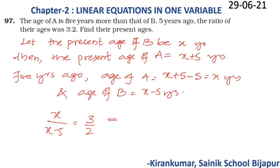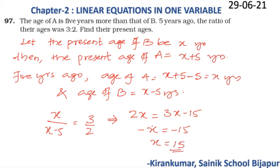Cross-multiplying the ratio gives 2x = 3(x − 5), which simplifies to 2x = 3x − 15, so −x = −15, meaning x = 15. Therefore, the present age of B is 15 years and the present age of A is 15 + 5 = 20 years.